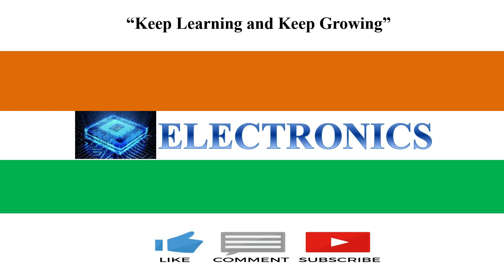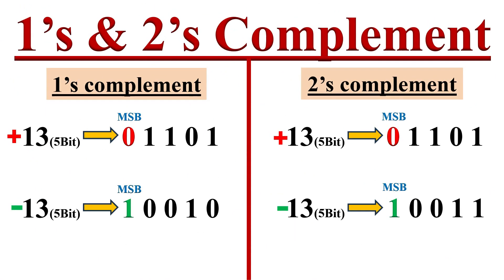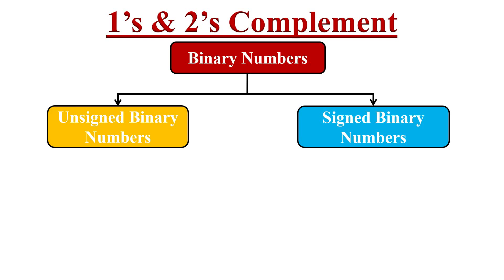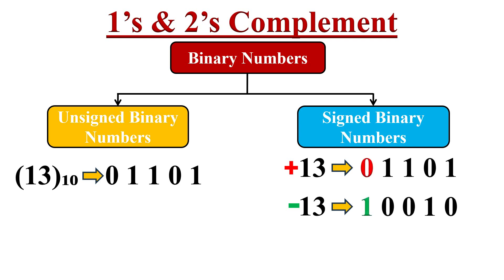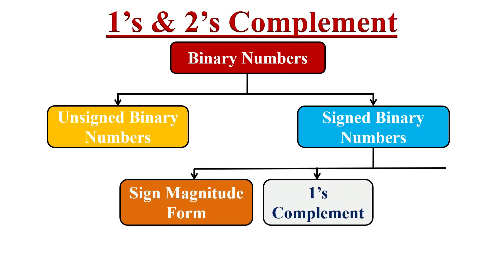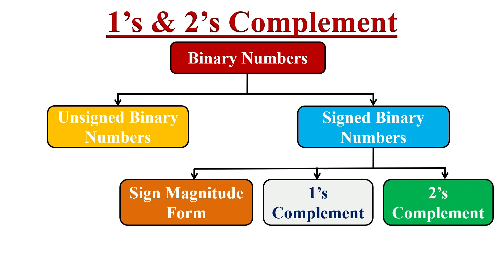Hello friends, welcome to the YouTube channel Electronics. In this video, we learn one's complement and two's complement representation of binary numbers. These two methods are most commonly used in digital circuits. We can broadly classify binary numbers into two categories: unsigned binary numbers and signed binary numbers. There are three different types to represent signed binary numbers: sign magnitude form, one's complement form, and two's complement form.